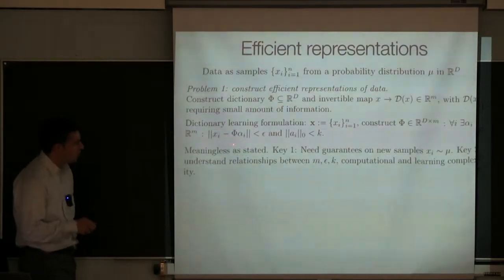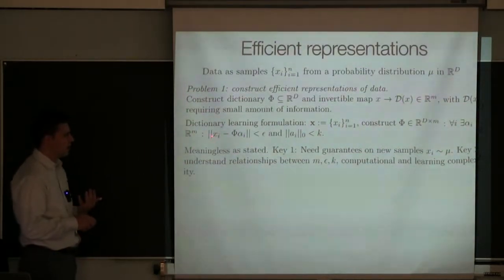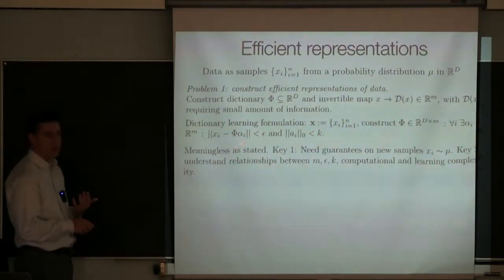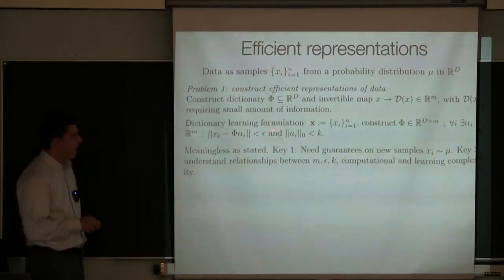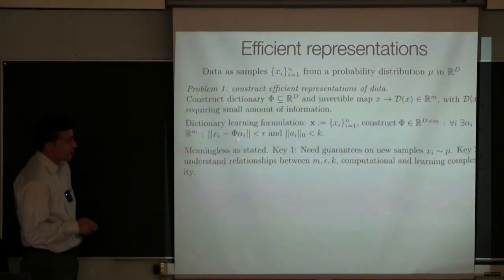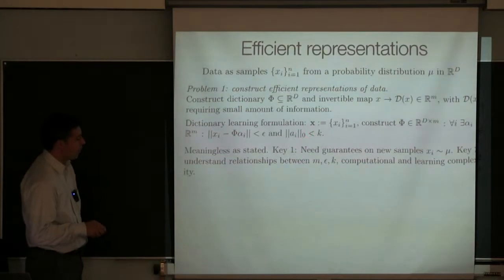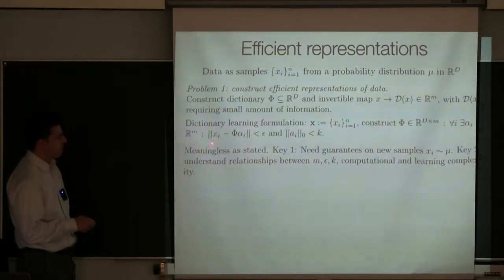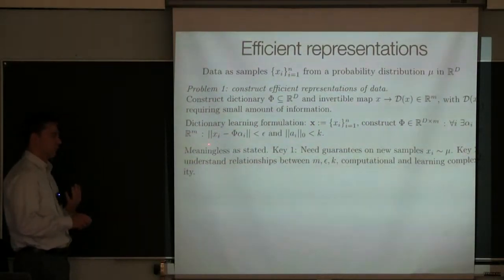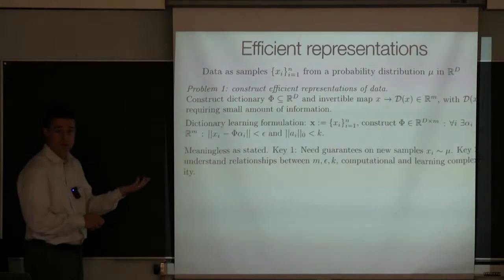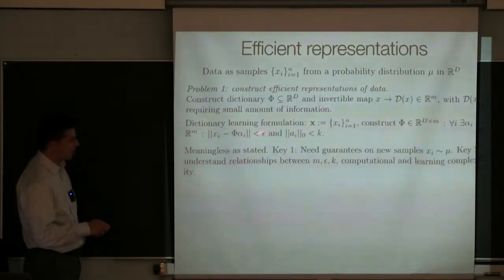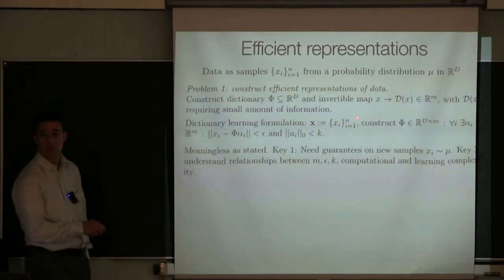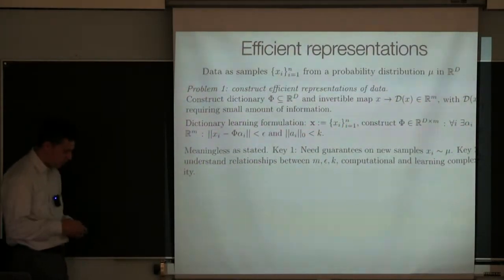What I'm interested in is really compressing the data. I have some training data today in my database, but I want to be able to compress the data that I'm going to collect tomorrow. So it's crucial — one way of making this problem well-posed and meaningful — is to say the x_i's are sampled from a probability measure. I see N samples today; that's my database. I'm going to draw more samples tomorrow, and tomorrow I want to achieve a certain performance in terms of accuracy epsilon and sparsity K. That's the game we're going to play.